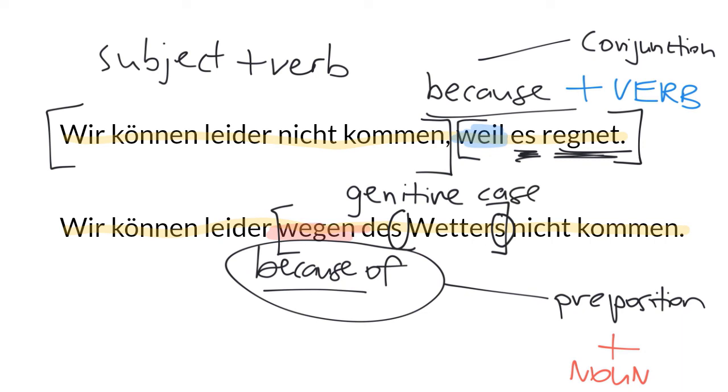Because wegen is a preposition that follows with the genitive. Now, more and more commonly, it's actually being followed by the dative in German. But that's just to explain that. You can explore that further by yourself, if you like.